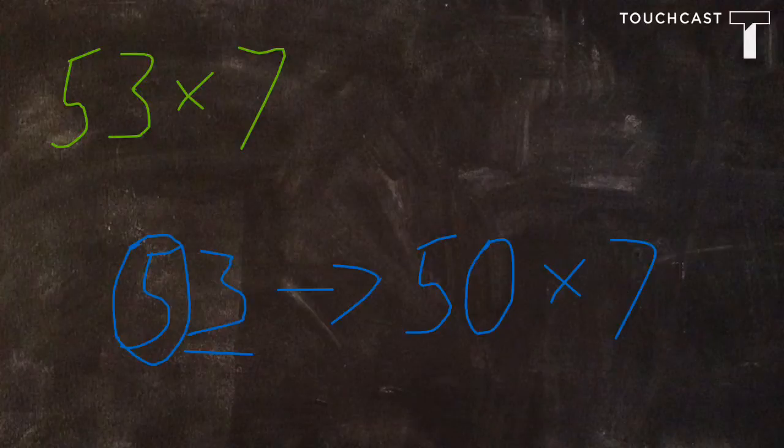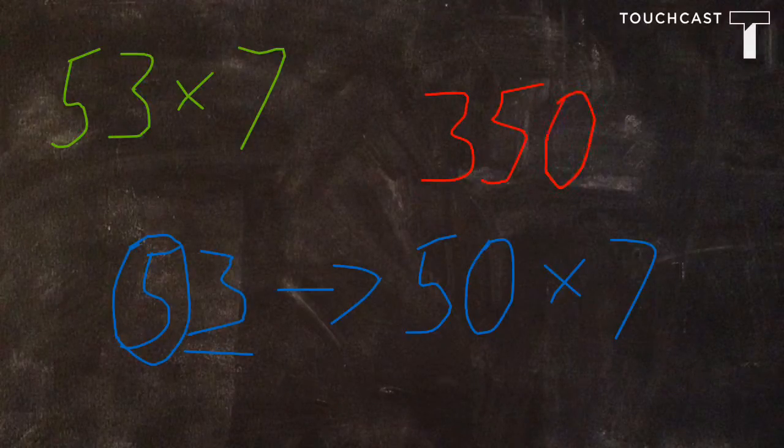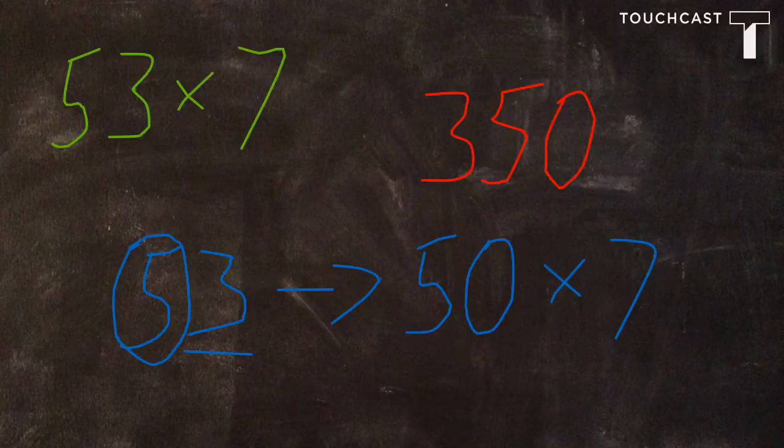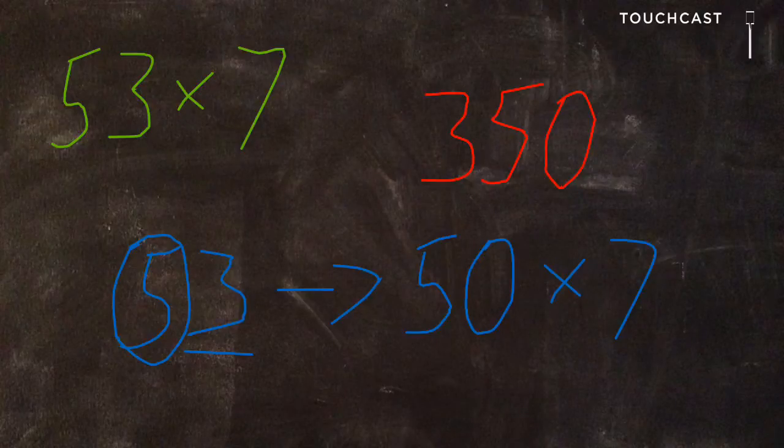5 times 7 is 35. And since it is a 10 times a 1, again, we put that 0 in the 1's place. So our estimate for 53 times 7 is 350.